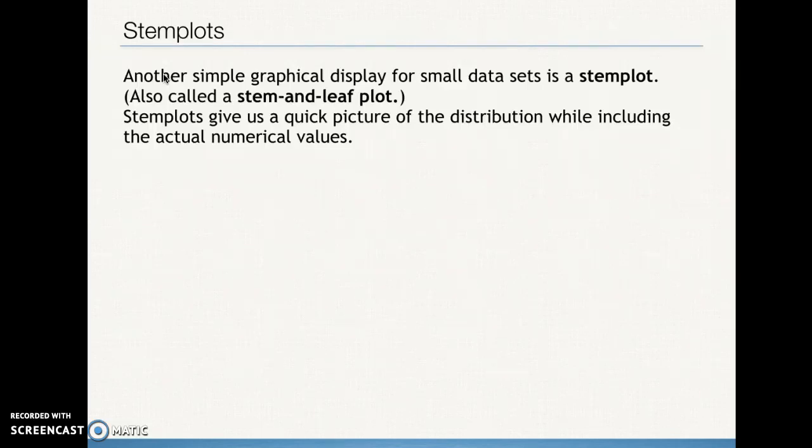We'll work on dot plots when we start doing our practice problems. For right now, let's take a look at some other type of graph for quantitative or numerical data. And that is called a stem plot. Sometimes we call it a stem-and-leaf plot, but in statistics, we usually just call it a stem plot. And it also gives us a quick look at the shape of the distribution. However, it also allows us to see the actual values of our variable. And both of these graphs are univariate, meaning we're only showing the values or the distribution of one variable at a time.